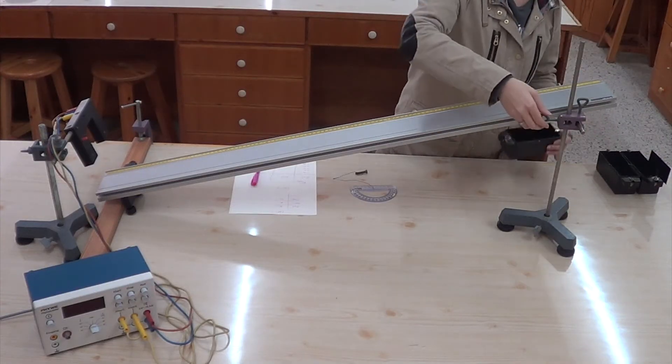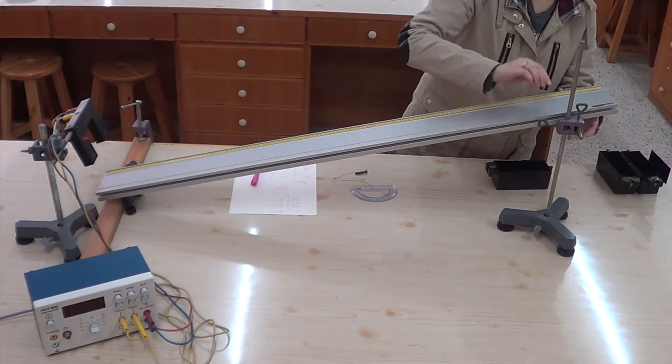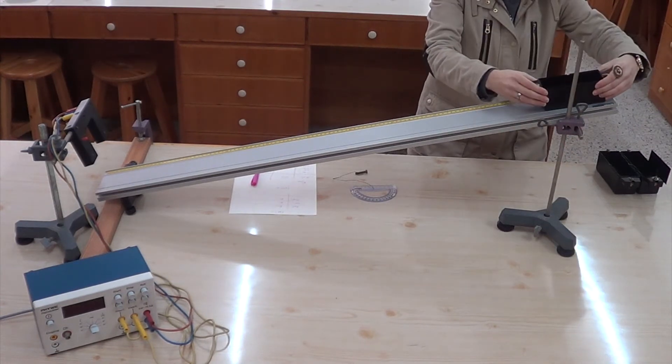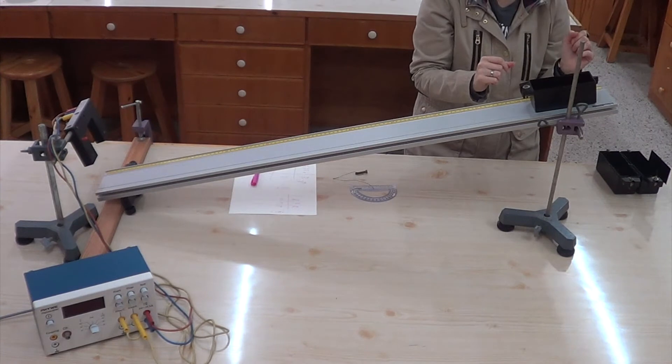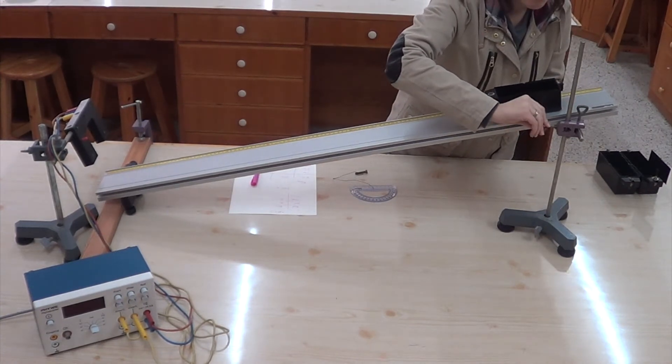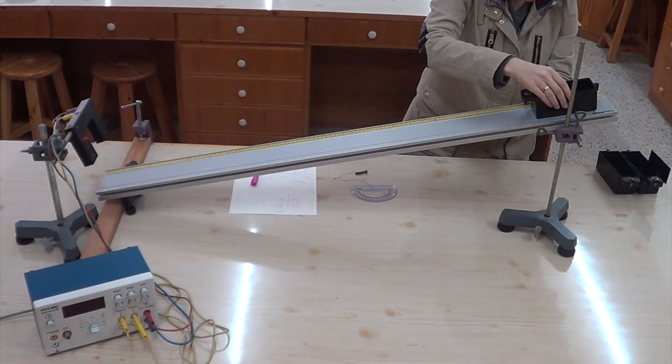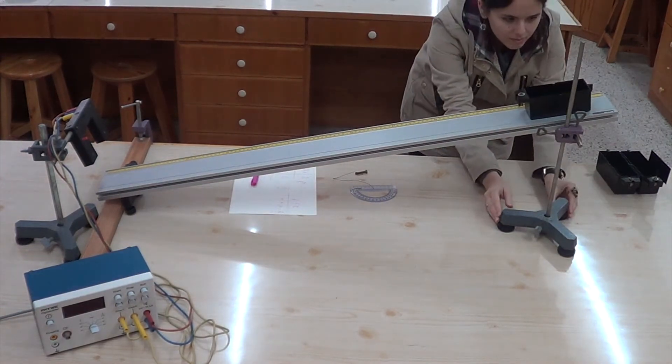Adjust the angle in such a way that the cart just starts moving. You need to make sure that it moves very slowly. You may decrease the angle either by lowering the height of the riser or by moving the riser away from the point where the timer and the gate are standing.